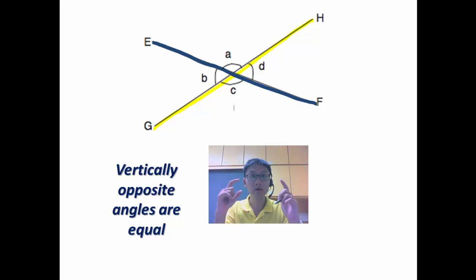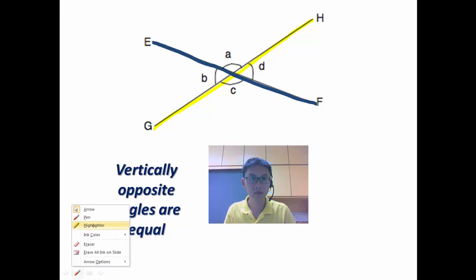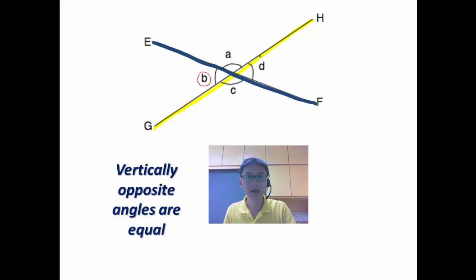the angles that are opposite each other, vertically opposite each other, so B and D are equal. So there's something you must remember.